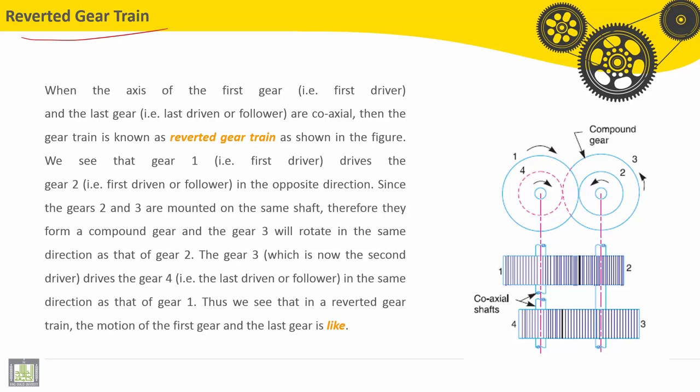I will present here some features related to reverted gear train. When the axis of the first gear, or first driver, and the last gear, or the last driven or follower, are coaxial, then the gear train is known as reverted gear train.